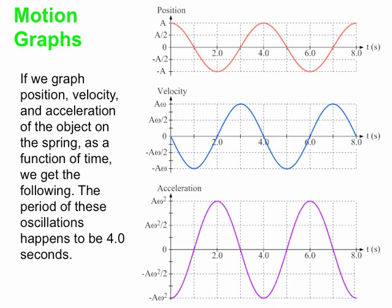The top graph shows the object starts at x equals a. The middle graph shows it starts with a velocity of zero — we let it go from rest at x equals positive a. The spring pulls it back toward zero, the equilibrium length of the spring. The velocity goes in the negative direction and the acceleration is negative, because the force is in the negative direction when the object is on the positive side of zero. As the position decreases to zero, the speed increases, and the acceleration decreases because the acceleration is proportional to the force, and the force is bigger the more you displace the object. So the closer the displacement gets to zero, the smaller the acceleration gets.